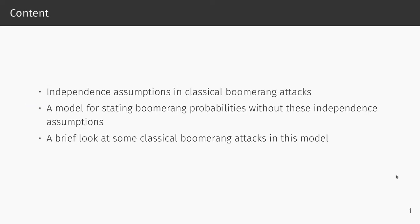We will start by looking at the independence assumptions made in boomerang attacks, and how making these assumptions can lead to some surprising results. We will then give a high-level overview of the model we created to formulate boomerang probabilities without relying on these independence assumptions, as well as some of the results we were able to prove in this model. Finally, we will take a brief look at how the probability estimates of some classical boomerang attacks change when re-evaluated in this model.